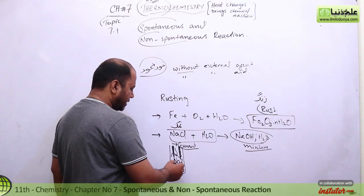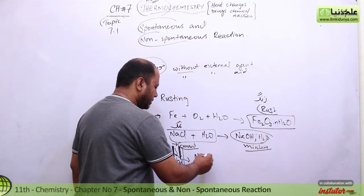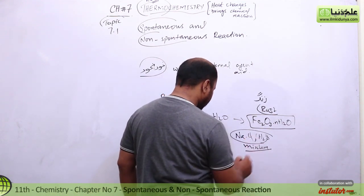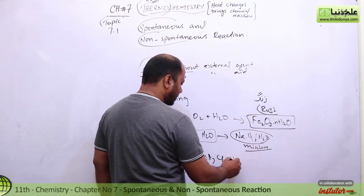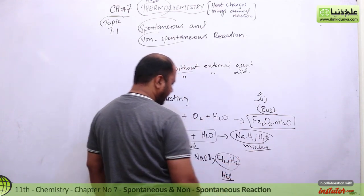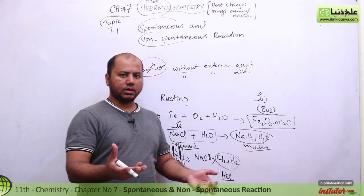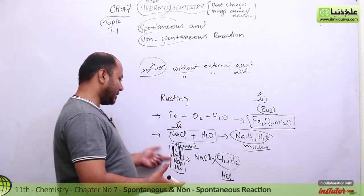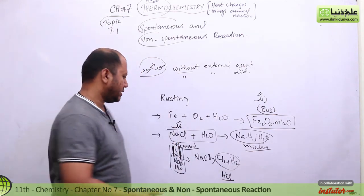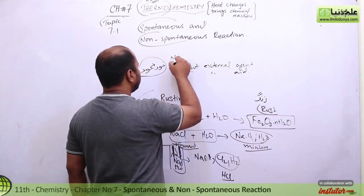Toh isse reaction hoga: NaOH banega, chlorine gas banegi, hydrogen gas banegi. Agar aap golida kar denge toh HCl gas banegi. Toh yeh khud nahi ho raha — jab NaCl aur paani hote hain kuch bhi nahi hota, but bijli lagaenge toh ho ga. Bijli kya hai? External agent. Yeh non-spontaneous hai.